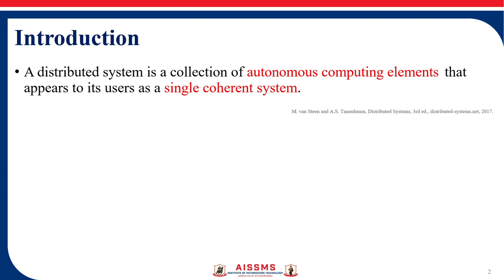Now we will list out some of the characteristics. These include: concurrency, fault tolerance, scalability, transparency, heterogeneity, consistency, replication, inter-process communication, load balancing, and security.